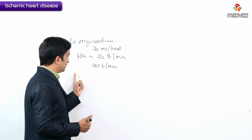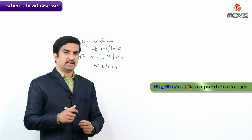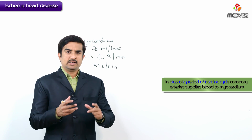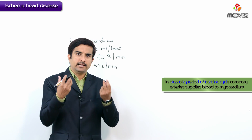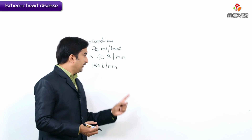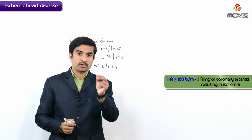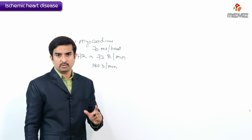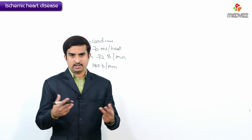Another important point is that when the heart rate is approximately 180 beats per minute, the diastolic period of the cardiac cycle is reduced. We must know that the coronary arteries supply blood to the myocardium during the diastolic period of the cardiac cycle — meaning coronary artery filling mainly takes place during diastole. So if the heart rate reaches 180 bpm, it limits coronary artery filling, potentially resulting in ischemia.